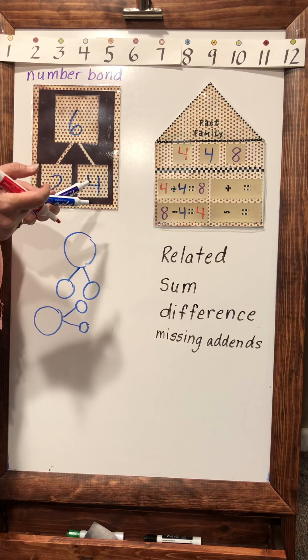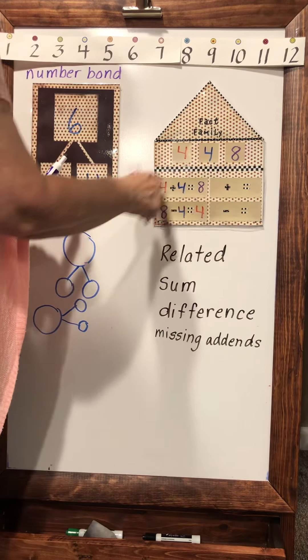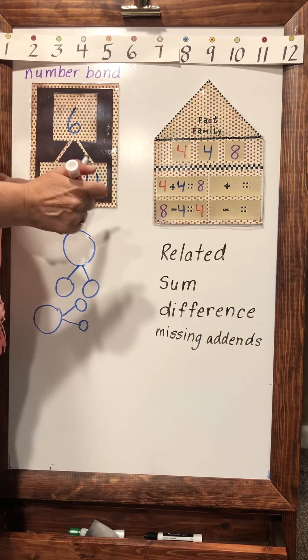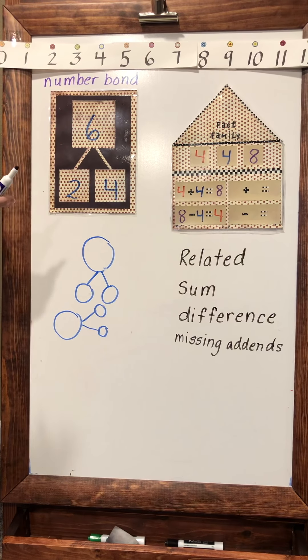So doubles is the only time you have two number sentences in your fact family. I hope this helps, talk to you soon, bye.